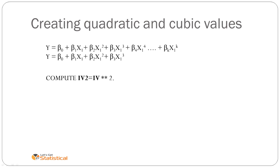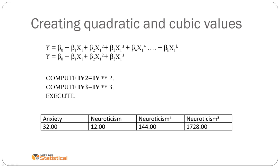So it follows that to compute IV2 or X squared, we just take each of the IV and we square it, and to compute the X3, we just cube all of the IV. So in our datasheet, the first score might look like this. Someone with anxiety of 32 have neuroticism of 12, and if that's squared, that's 144, or 12 cubed is 1728.